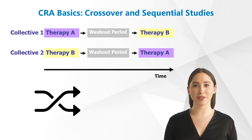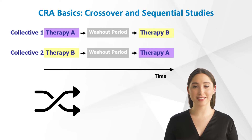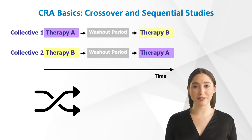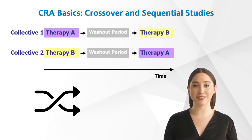Today we take a look at two interesting study designs. One study design example is the so-called crossover study, in which each subject is treated with all therapies. The example shows a two-armed study in which all subjects first receive therapy A, and then after a washout period, receive therapy B.